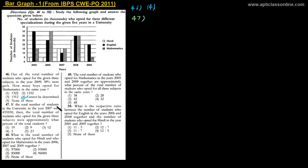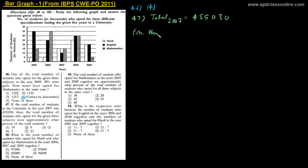For question number 47, the question reads: If the total number of students in the university in the year 2007 was 455,030, then the total number of students who opted for the given three subjects was approximately what percent of the total students? So we need to find the students for the three subjects in 2007 and calculate what percent that is of 455,030.